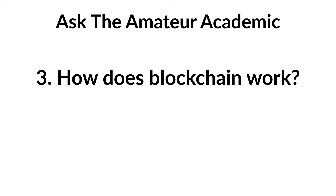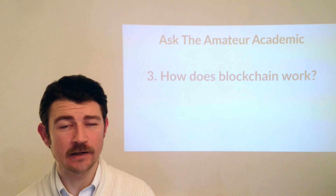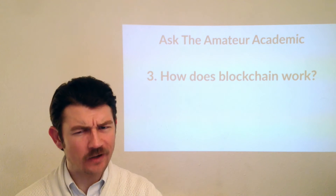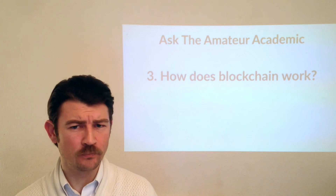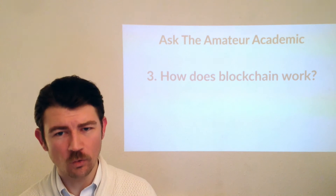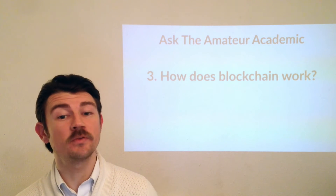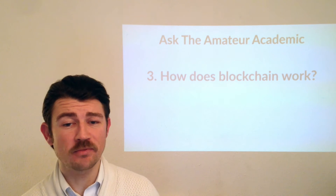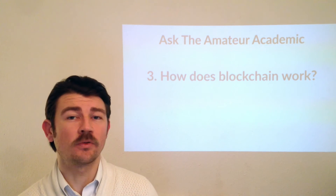But that still doesn't answer the question — how does blockchain technology actually work? That's the slightly complicated part. It involves a lot of mathematics. To cut a long story long, once the events are recorded, the blocks need to be verified by the nodes to be added to the blockchain. This verification is where the mathematics and the cryptography come in, with hashing.